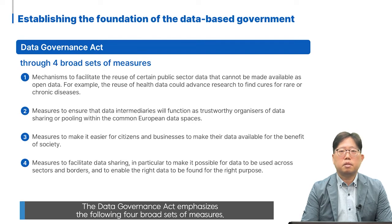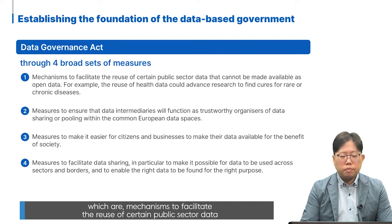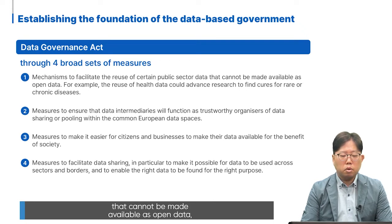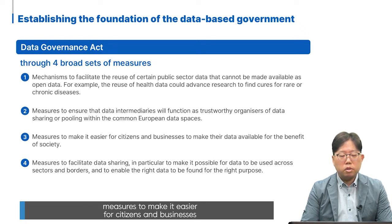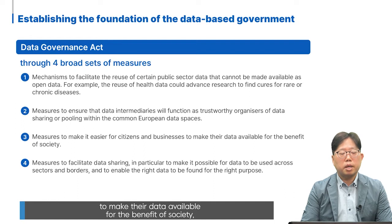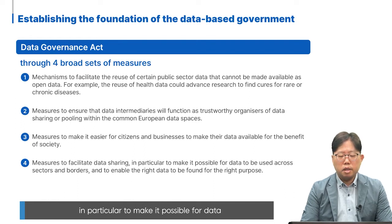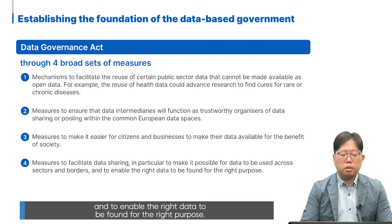The Data Governance Act emphasizes four broad sets of measures: mechanisms to facilitate the reuse of certain public sector data that cannot be made available as open data; measures to ensure data intermediaries function as trustworthy organizations over data sharing or pooling within the common European data space; measures to make it easier for citizens and businesses to make their data available for the benefit of society; and measures to facilitate data sharing across sectors and borders.